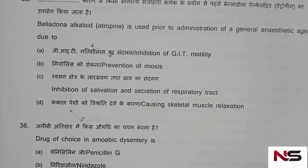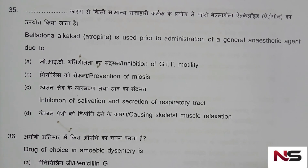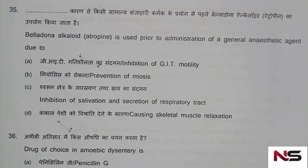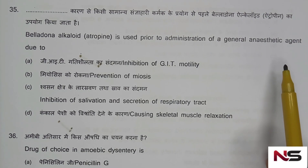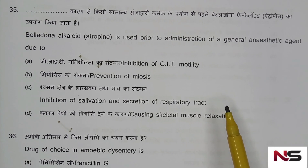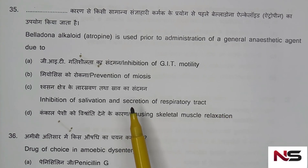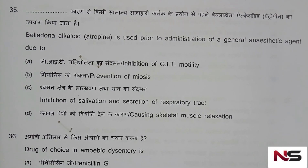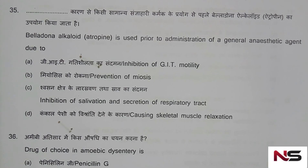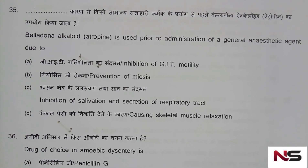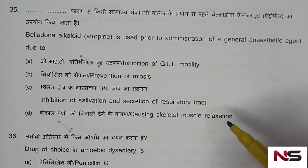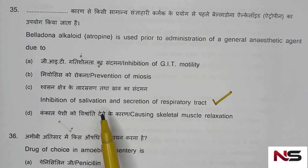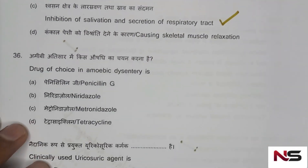Question 35: Belladonna alkaloid (atropine) is used prior to administration of a general anesthetic agent due to — option A: inhibition of GIT motility, option B: prevention of miosis, option C: inhibition of salivation and secretion of respiratory tract, option D: causing skeletal muscle relaxation. The correct answer is option C — inhibition of salivation and secretion of respiratory tract.